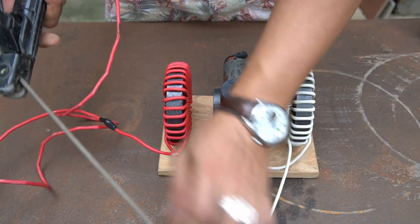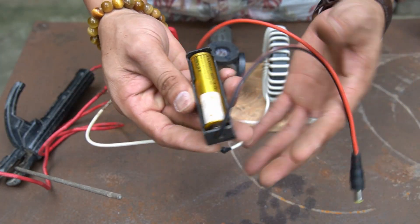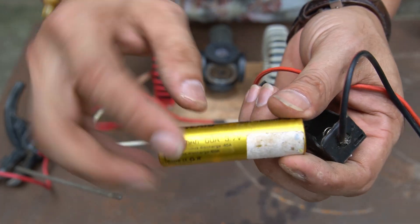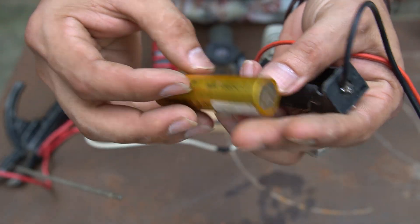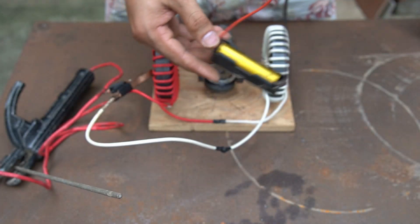I will put a soldering iron into the soldering iron to use. Next I will use a 3.7 volt battery to activate the motor to run.